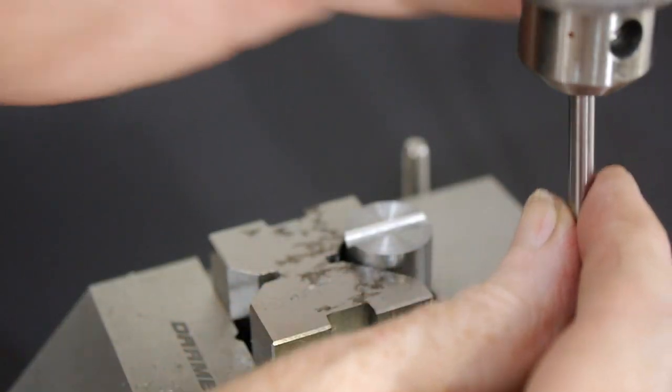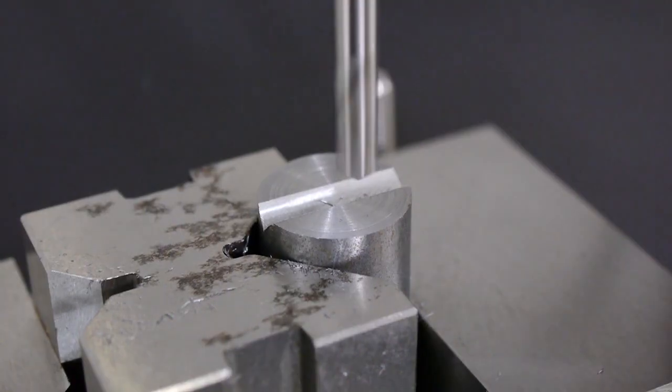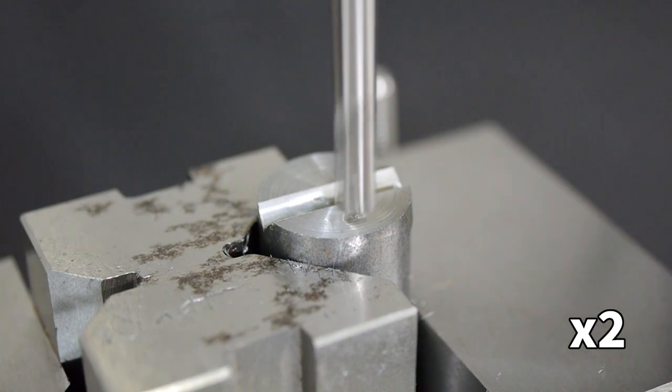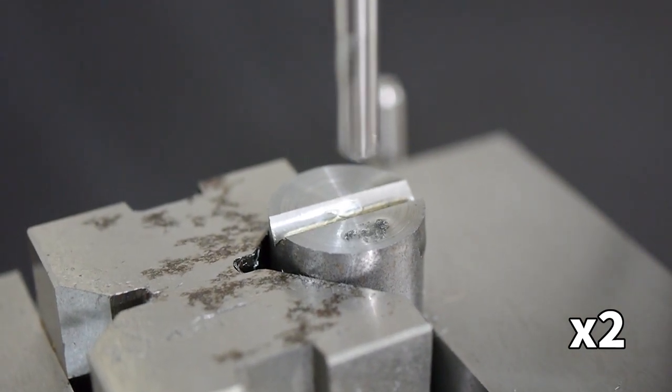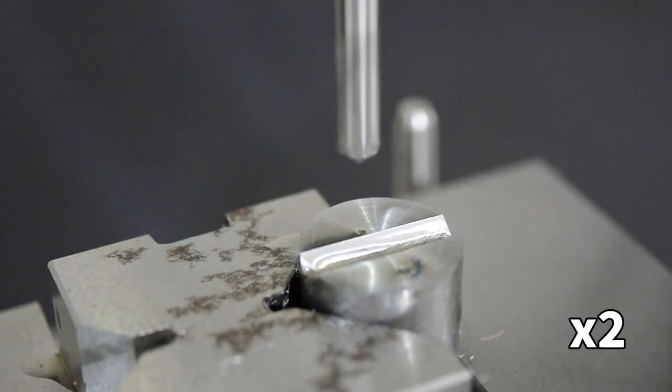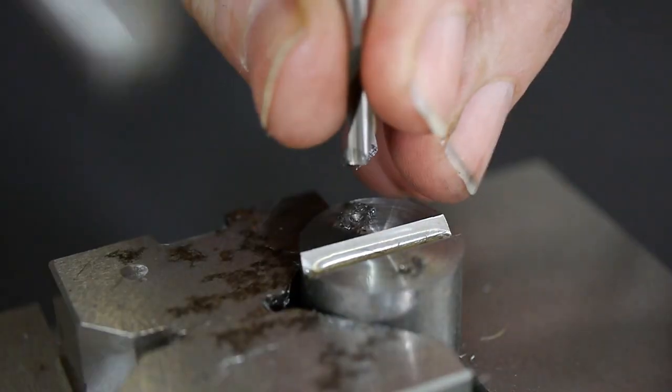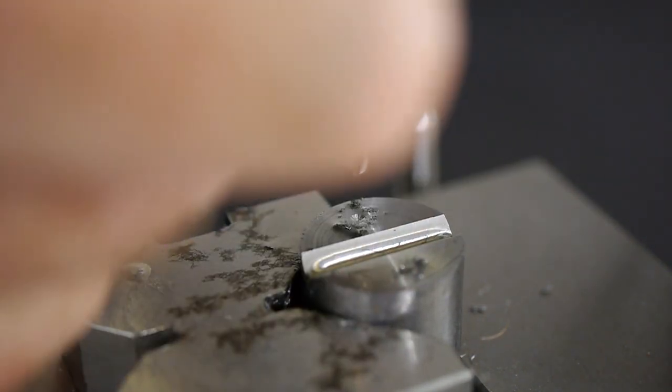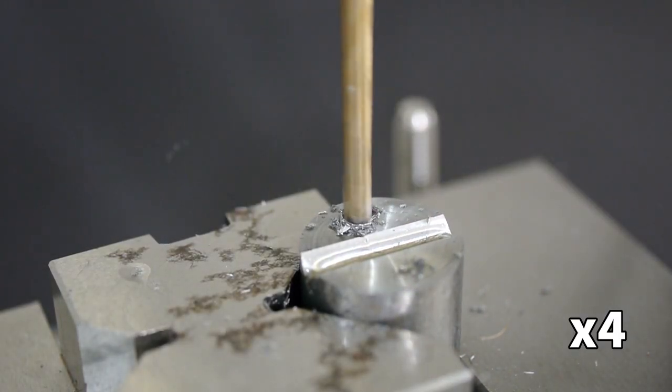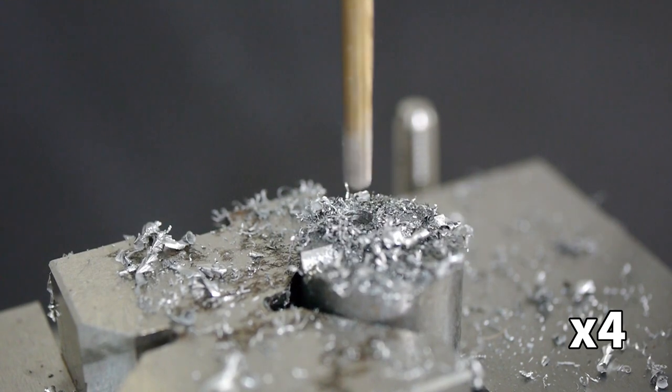A spotting drill avoids the need for a centre punch, as it can start a hole accurately on a flat surface. This one has a 120 degree point to match the grind on my twist drill set. I chose M4 because I thought I had plenty of M4 hardware kicking around, though we'll see later that wasn't quite as true as I hoped. Twist drills tend to cut a little oversize unless the grind is perfect, so this 3.5mm twist drill is a little loose for an M4 thread.